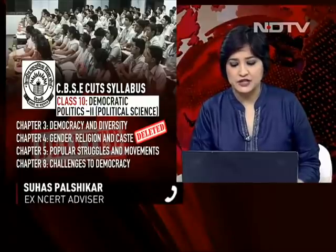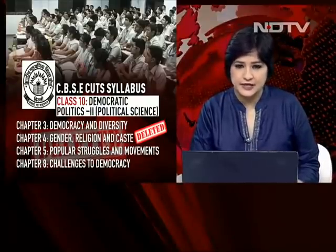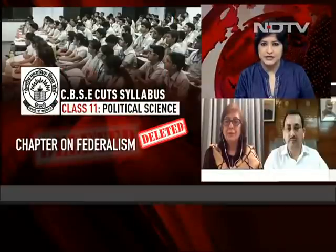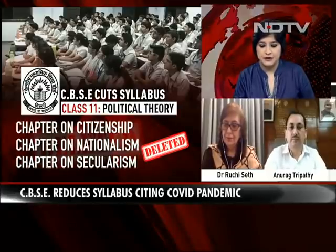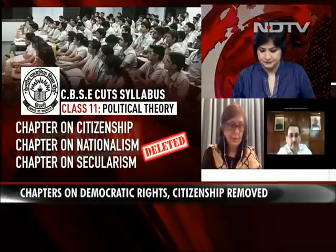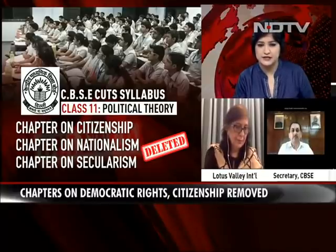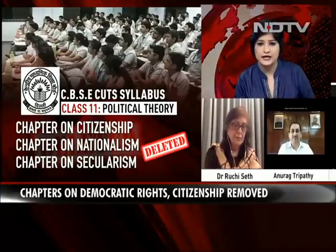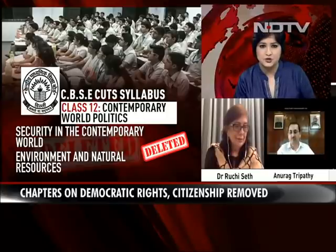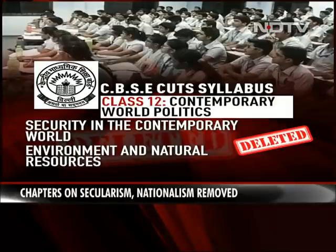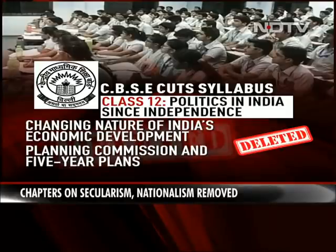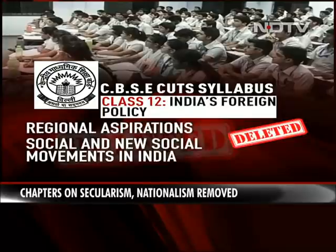Professor Palshikar, do stay with us because we're also being joined by Anurag Tripathi, Secretary of the CBSE, who can perhaps help explain why the decision was taken to drop these particular chapters. We have Professor Palshikar with us, who advised the NCERT on the political science textbooks. He asks why these specific chapters — democratic rights, democracy and diversity, gender, religion and caste — were selected. Is this being done perhaps to toe a particular political line? What was the basis of selection for these chapters to be deleted?